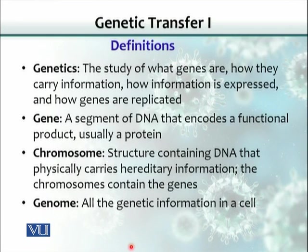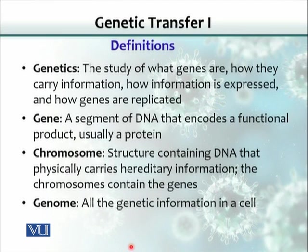A gene is basically a segment of DNA that encodes a functional product, although that functional product usually is a protein, but not always. Transfer RNA and ribosomal RNA are typical examples of genes that are never translated into proteins. So when we talk about a gene, we always tend to think there will be a protein associated with it, but that's not true all the time.